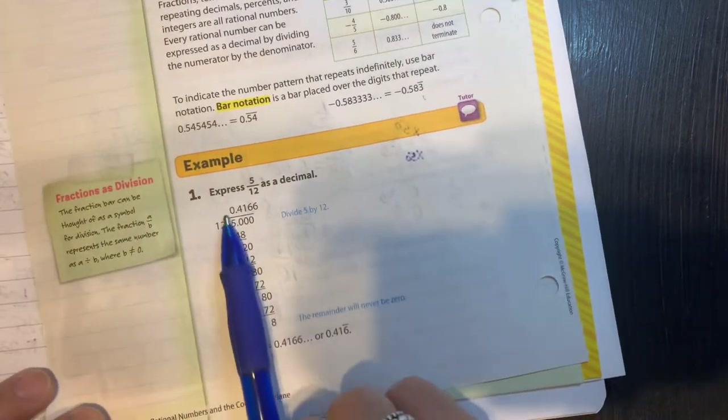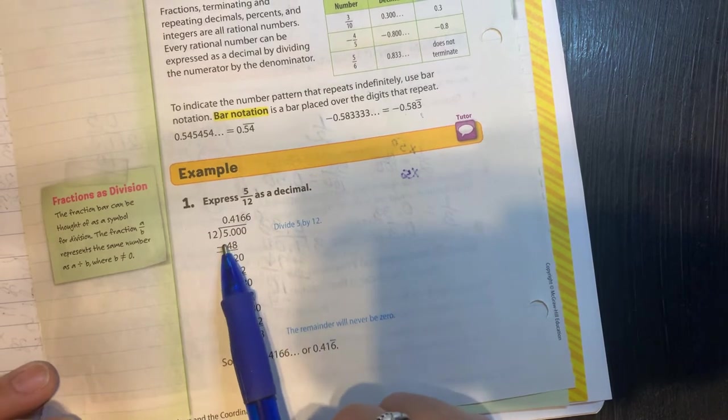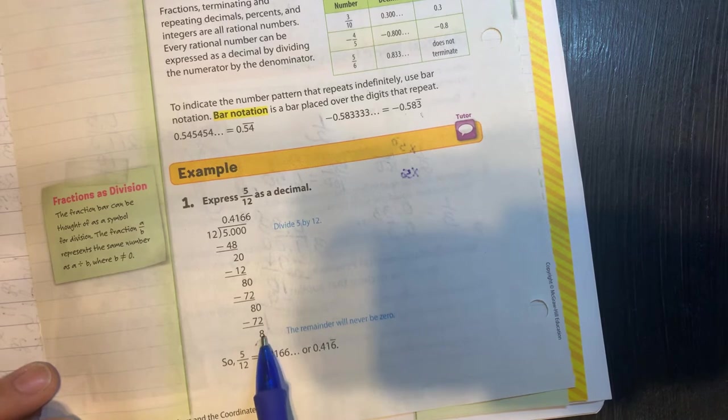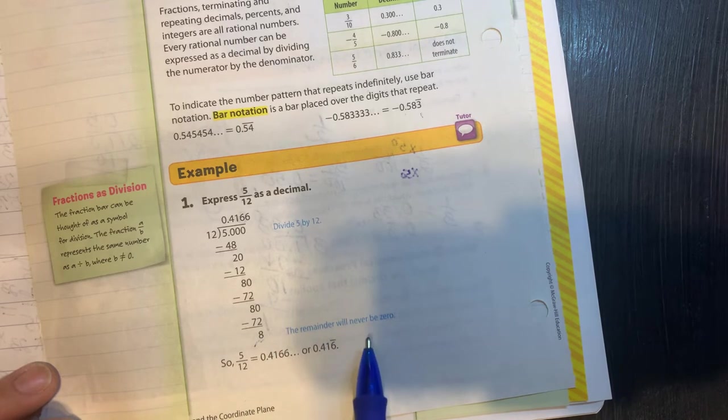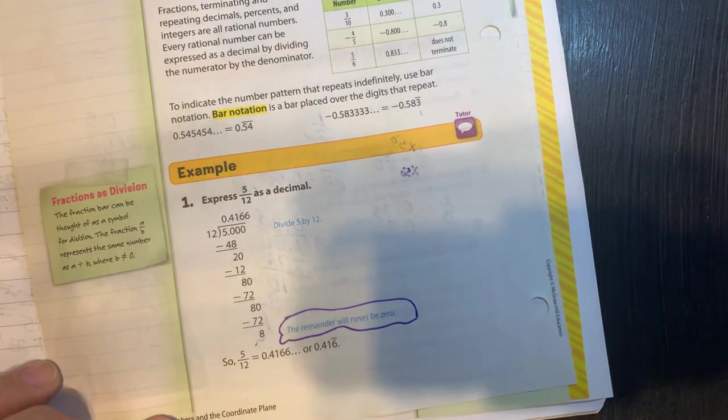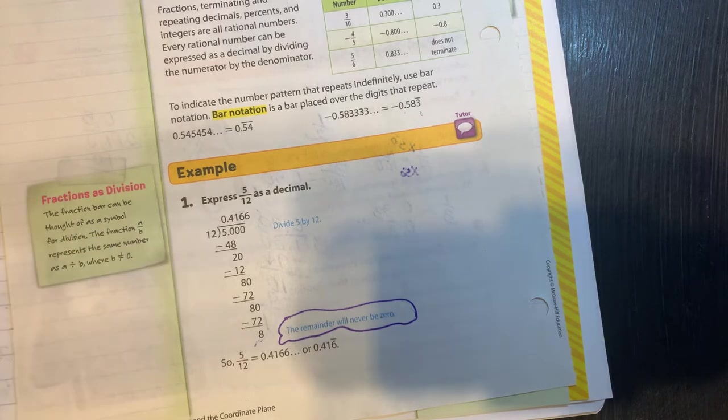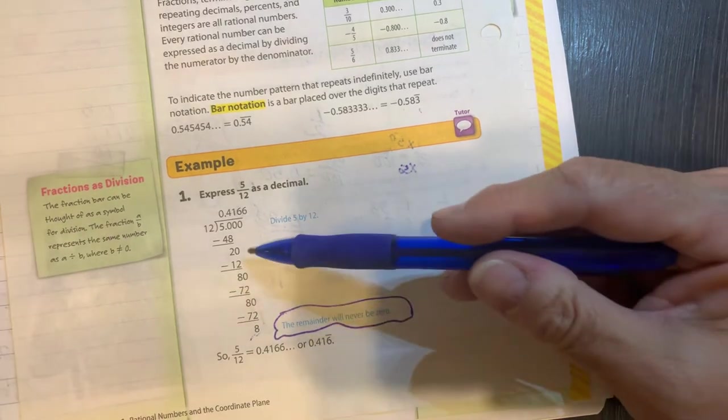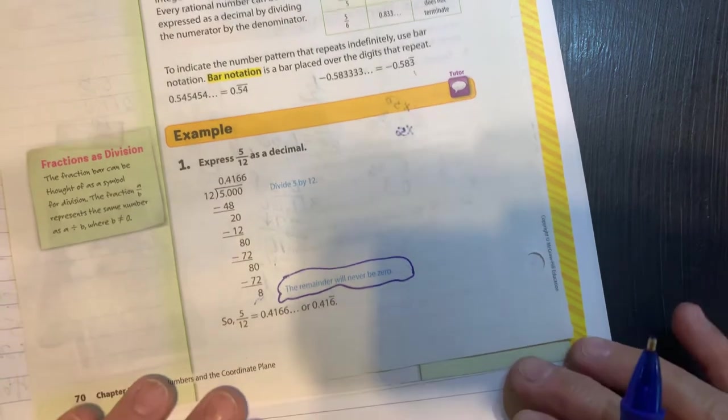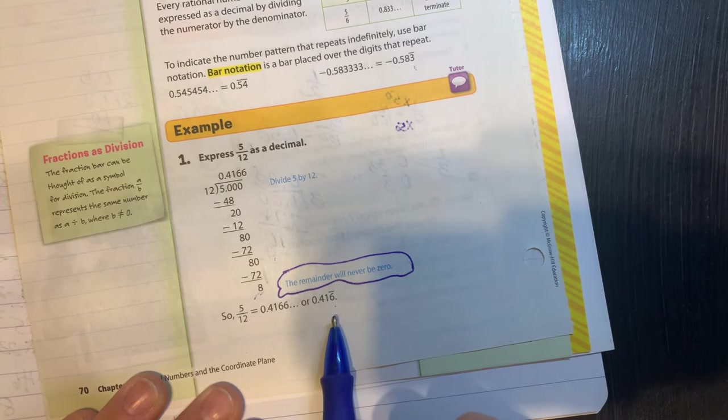Example number one, they're showing you how to express 5/12 as a decimal, and they're doing it with division. The thing about the repeating decimal is your remainder will never be zero. See? And you'll end up, you'll keep getting the same remainder each time. And if you keep trying to divide and divide and divide, you're going to be doing the same thing over and over. And so it's showing you that the 6 is what repeated there.